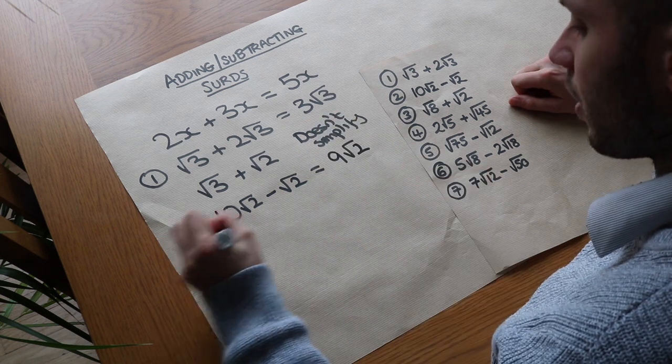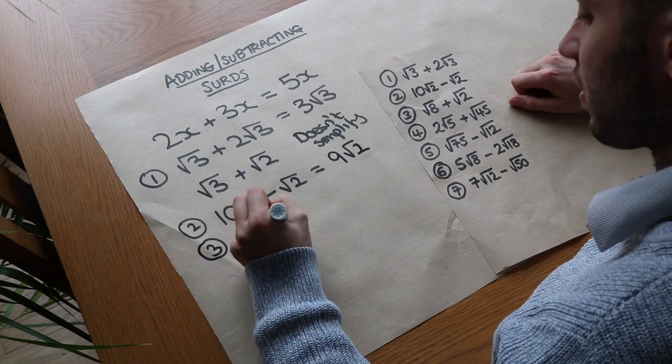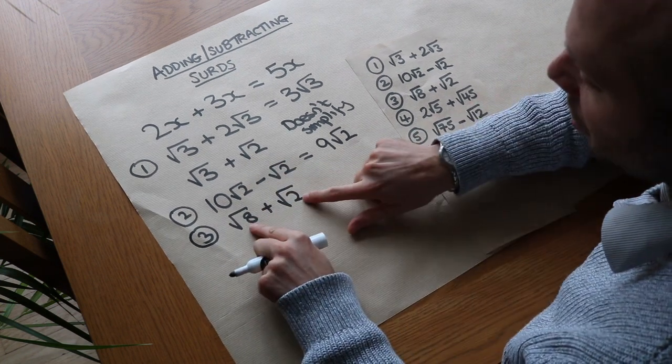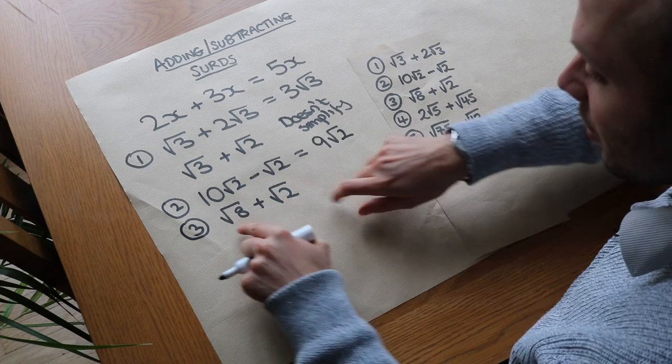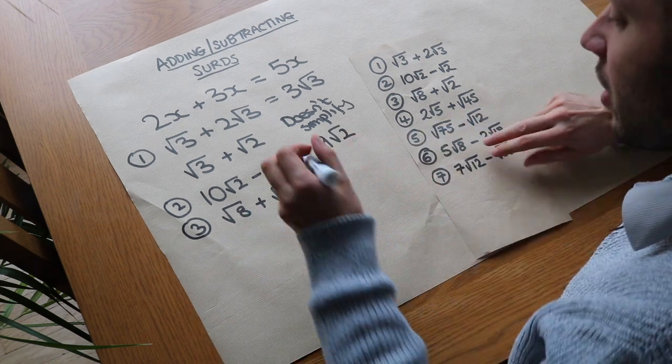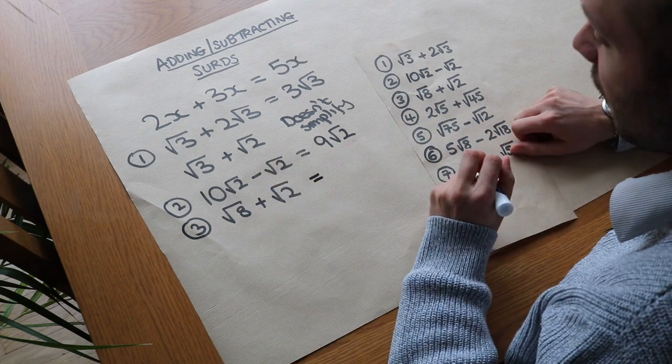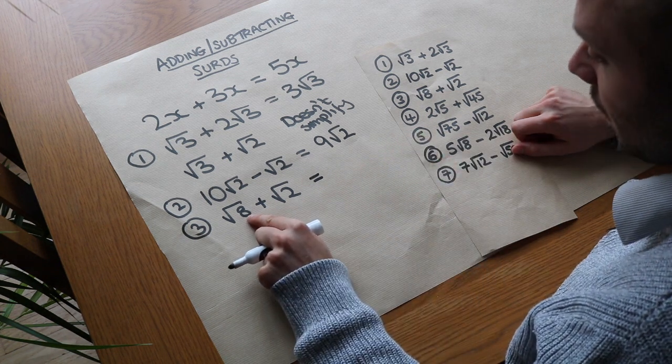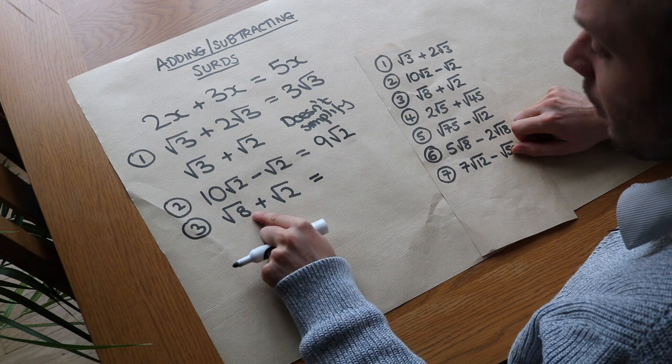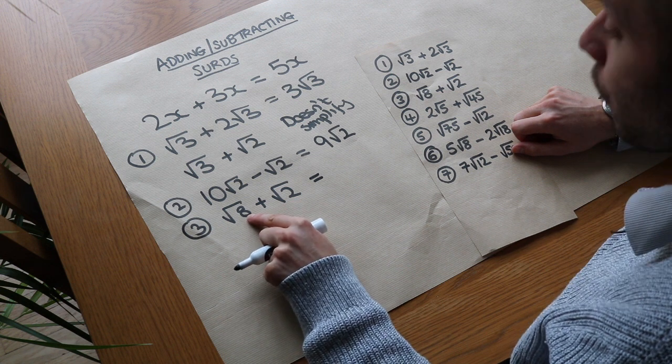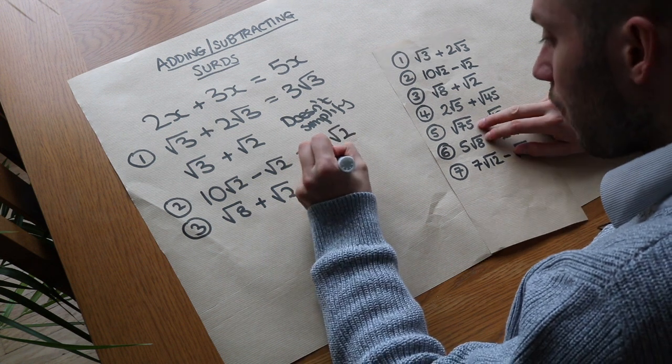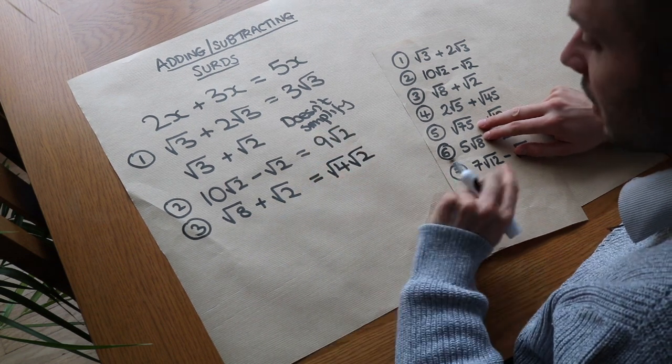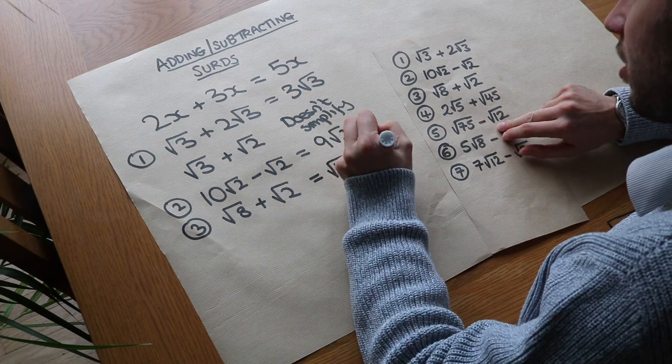What about question 3? Root 8 plus root 2. Well this time these numbers don't match, but it's possible to simplify the surds so that the thing under the root does match. So, root 8, how do we simplify that? We find the biggest square factor that goes into that number. Now the biggest square factor of 8 is 4, so we write it as root 4 root 2 because 4 times 2 is 8. And we always put the square factor first, and we've still got that plus root 2.